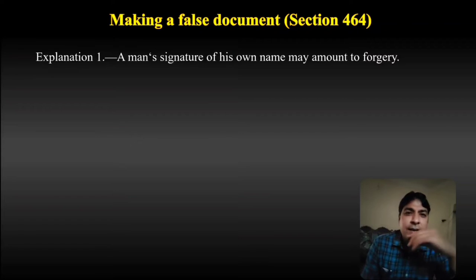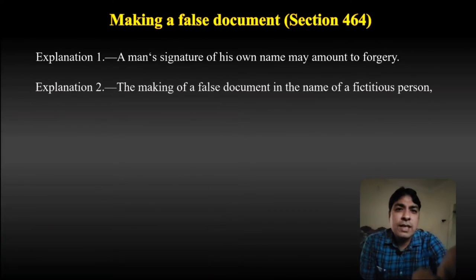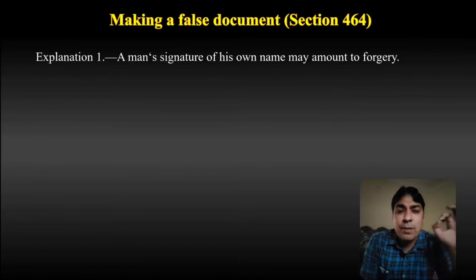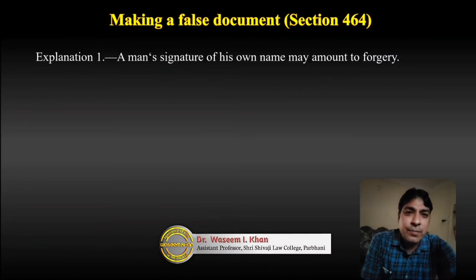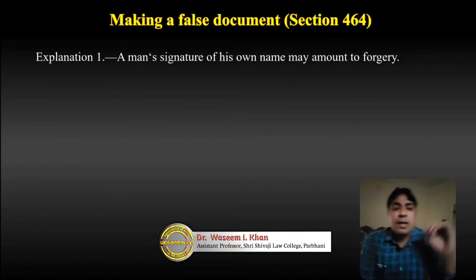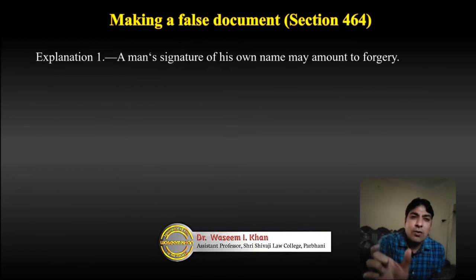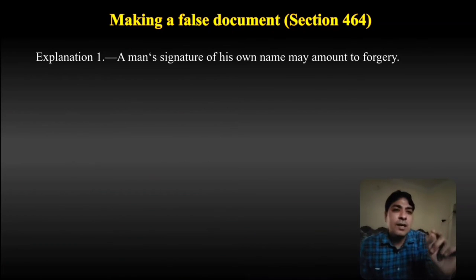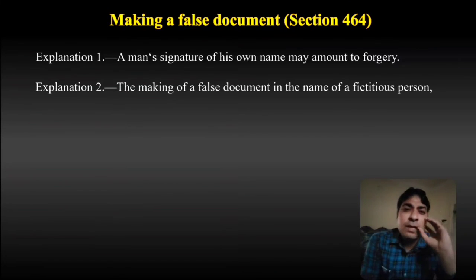Explanation first: A man's signature of his own name may amount to forgery. So even if a person writes their own name, it can still be forgery. For example, if a person makes some fraudulent alteration in a document using their own name, they can still be liable for forgery.